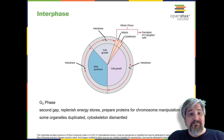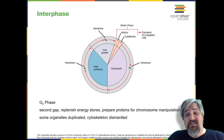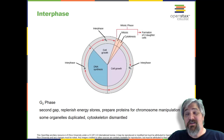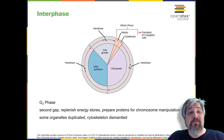G2 phase. In the G2 phase, or second gap, the cell replenishes its energy stores and synthesizes the proteins necessary for chromosome manipulation. Some cell organelles are duplicated, and the cytoskeleton is dismantled to provide resources for the mitotic spindle. There may be additional cell growth during G2. The final preparations for the mitotic phase must be completed before the cell is able to enter the first stage of mitosis.